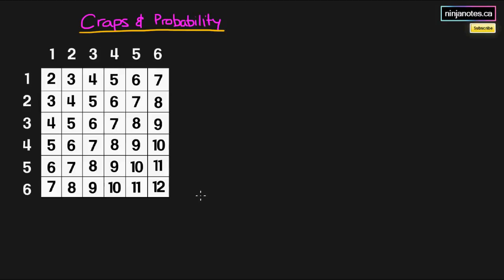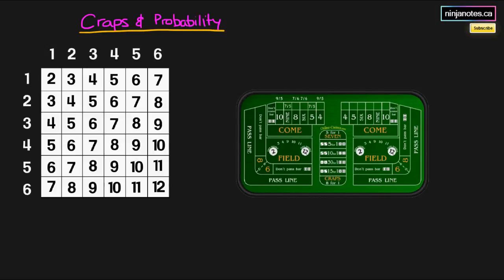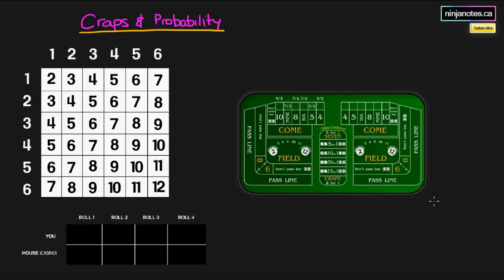We are covering craps, which is a game where you roll two dice. What we have here is a two-sided die diagram — on the left side we have one to six for one die, and one to six on the top for the other. So if you roll a two and a four, you get six; if you roll a four and a six, you get ten. That's what the diagram shows. We also have the craps board and we'll be looking at the rules for you and the house.